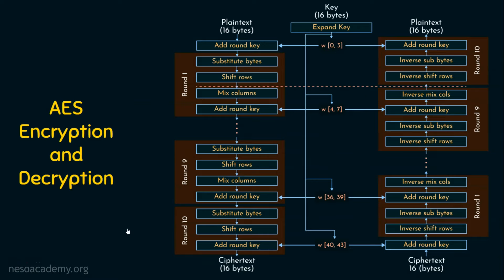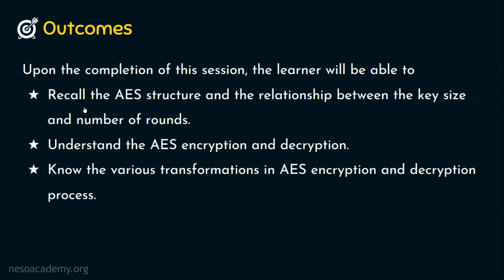The AES encryption and decryption process is now clear. There are 4 transformations in the rounds: substitute bytes, shift rows, mix columns, and add round key. We will elaborate on these in the next presentation. We recalled the AES structure and the relationship between key size and number of rounds, understood the AES encryption and decryption process, and examined the various transformations in every round. Thank you for watching.